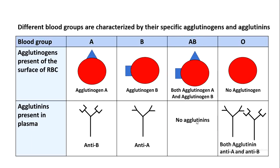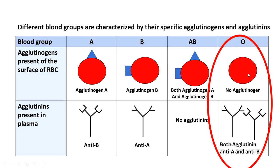Blood group O has no agglutinogen on the surface of red blood cells — the red blood cells are empty, which is why we call it O. Blood group O has both agglutinins anti-A and anti-B in the plasma, because it doesn't have agglutinogen A or agglutinogen B, so the anti-A and anti-B agglutinins have nothing to bind to inside the body.